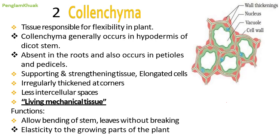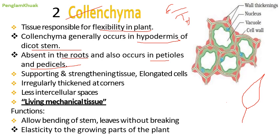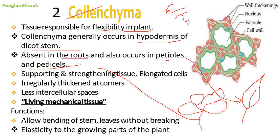The second type of simple permanent tissue is colenchyma. Colenchyma tissue is responsible for the flexibility of plants. Colenchyma cells generally occur in the hypodermis of dicot stems — that is, below the epidermis. They are absent in roots but occur in petioles and pedicels. Petiole is the leaf stalk that holds the leaf; pedicel is the stalk that holds the flower.